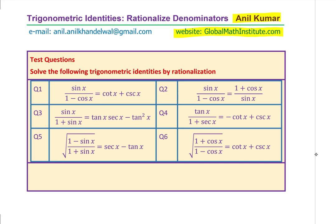In this video, we will consider six examples where we are going to prove trigonometric identities. The strategy followed will be to rationalize denominators. You will get a clear idea of what kind of identities should be solved using this technique of rationalization.